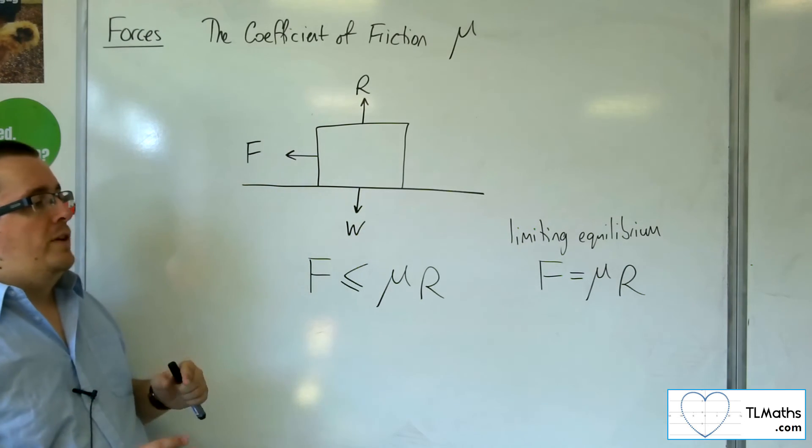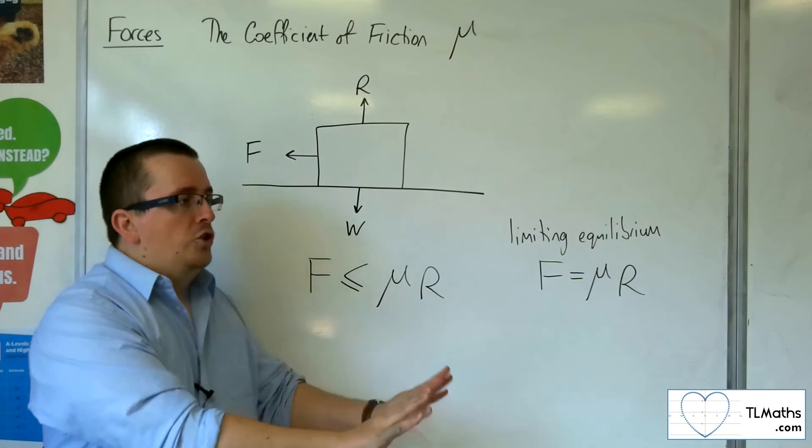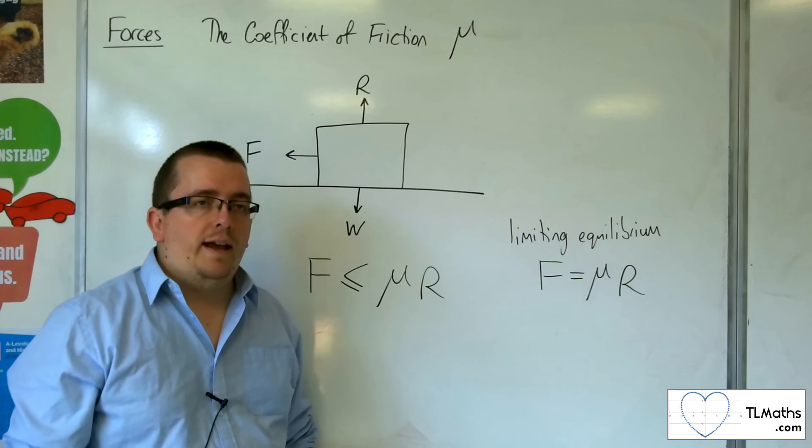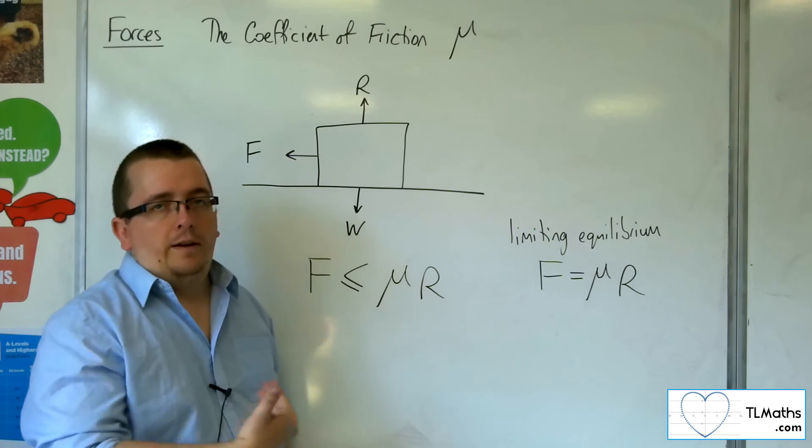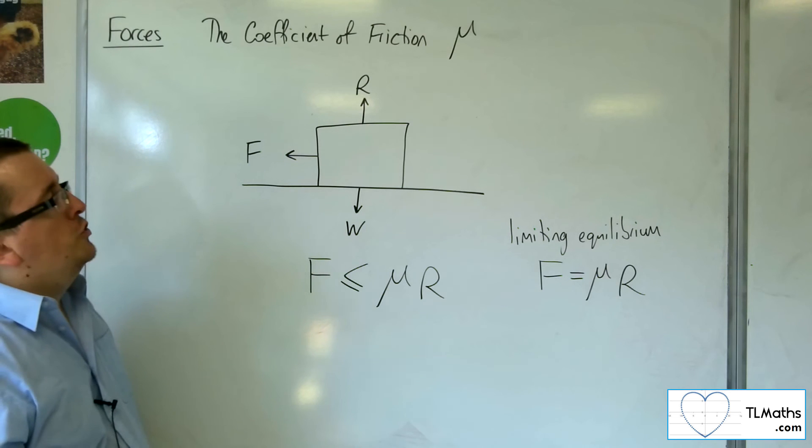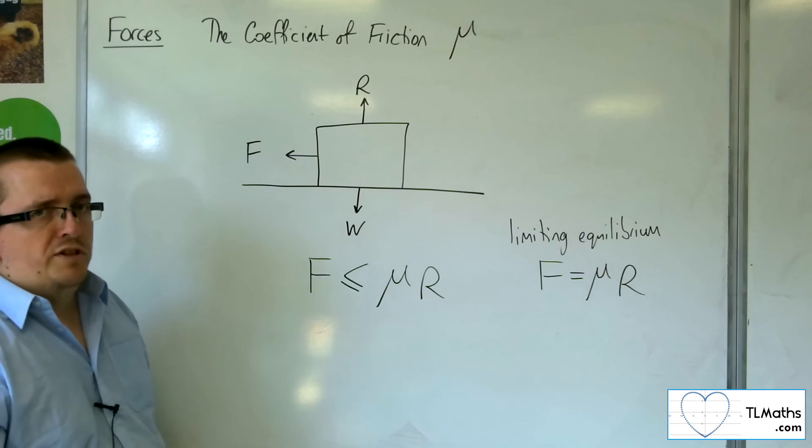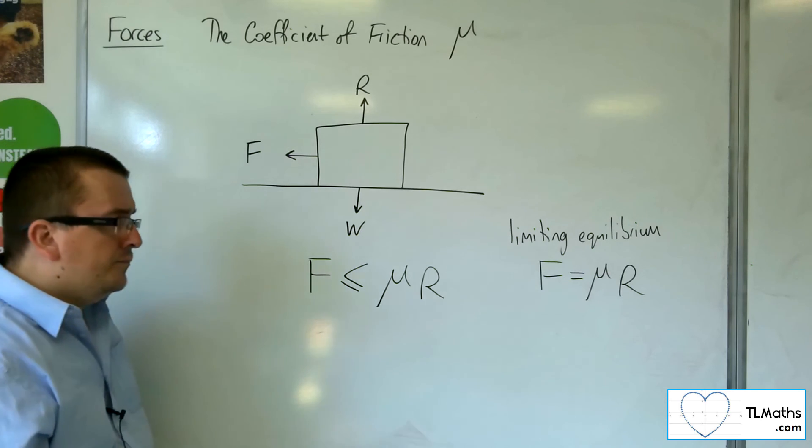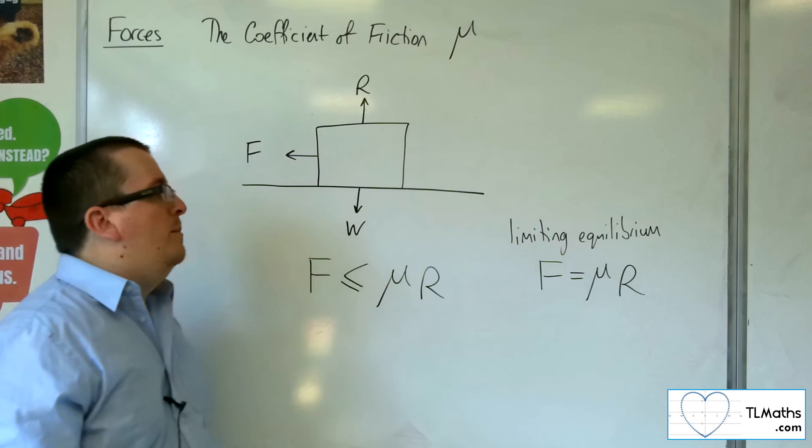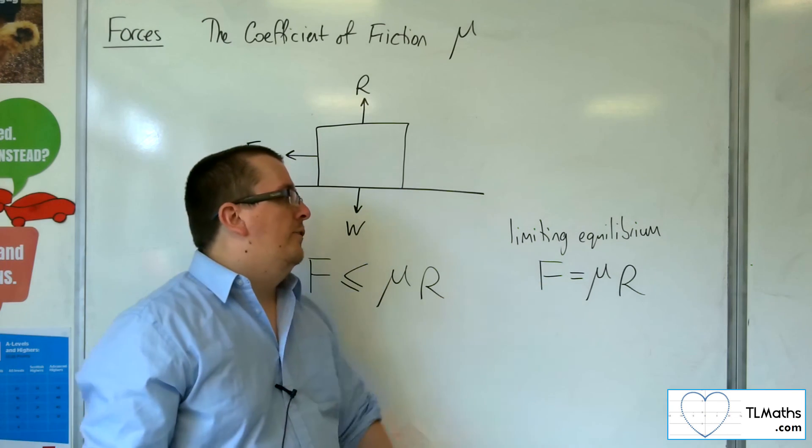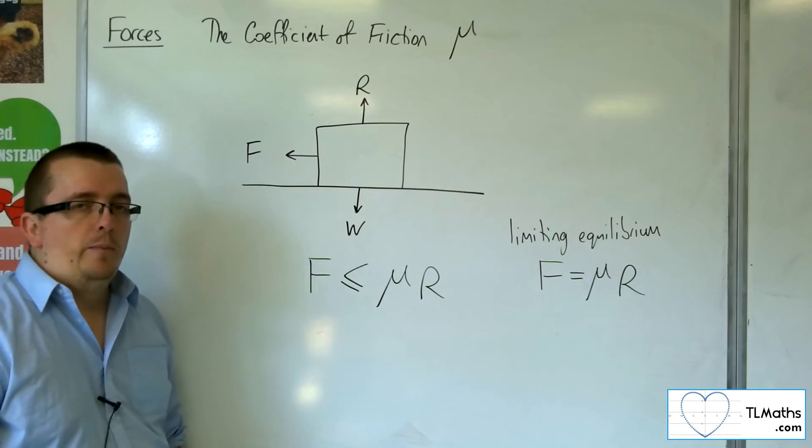That's also the case when we are just pushing the block. The friction force has been overcome, and you've got that constant friction force if the situation has a constant resistive force. If the problem says we're in limiting equilibrium, then we can say that the friction equals μ times R.